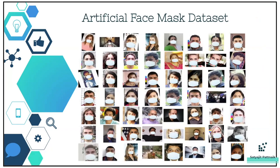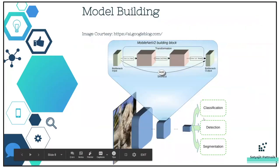To summarize the artificially created dataset steps: get a raw image, identify the facial area, create a bounding box, extract the region of interest, then get a mask image without background — it should have a transparent background, so it will be a PNG rather than a JPG — and embed that image as per facial orientation. All these images are artificially created with the mask tilted based on head orientation.